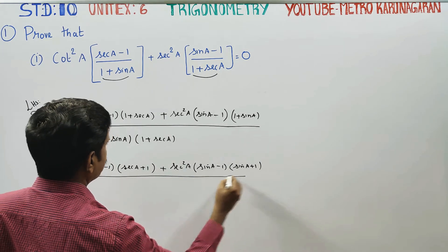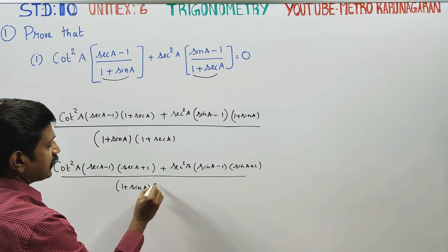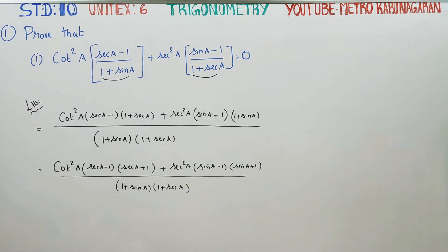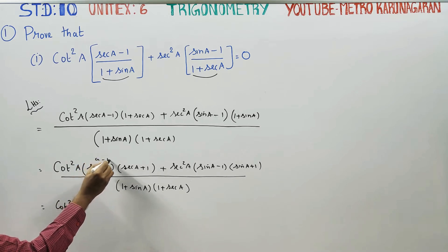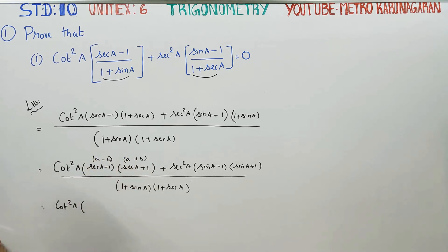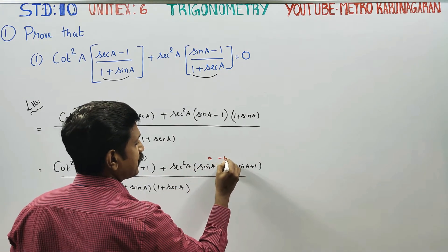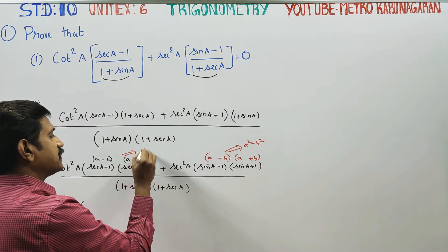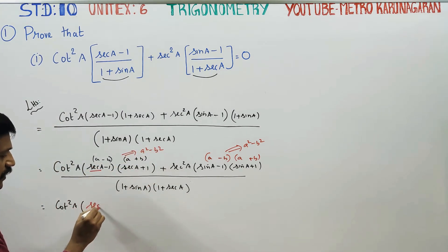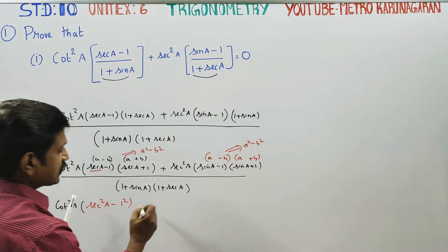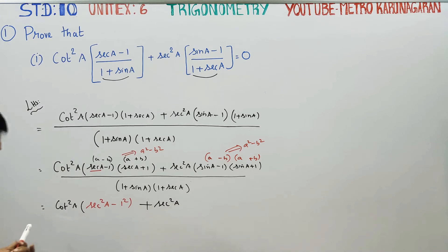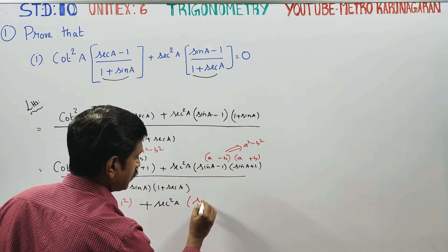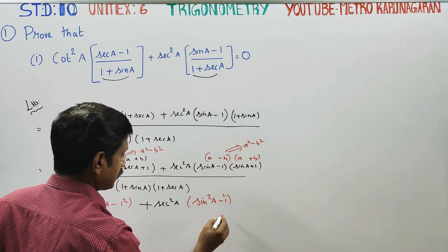All divided by 1 plus sin A into 1 plus secant A. Next, cot squared A. It is an (a minus b)(a plus b) formula.